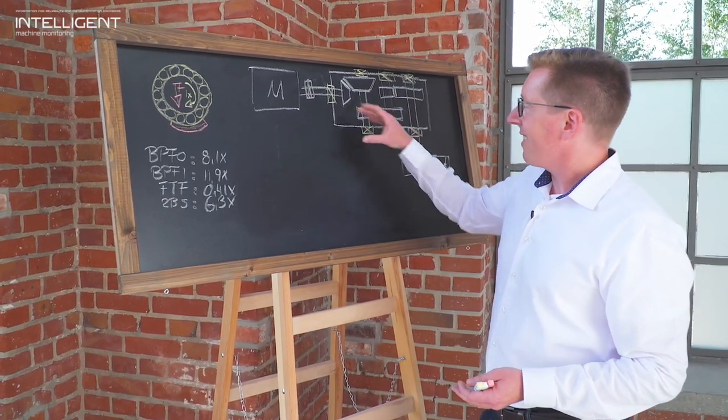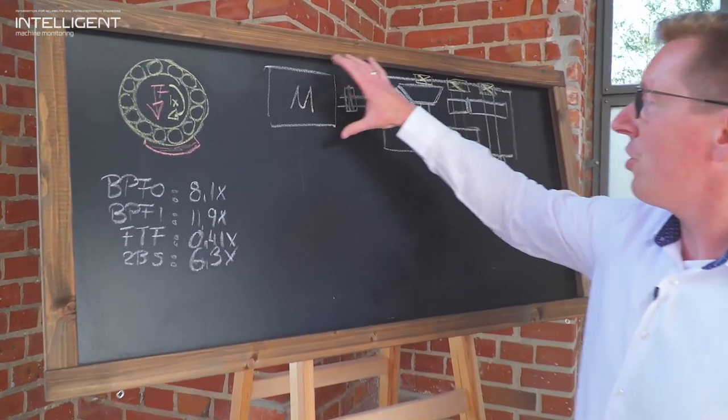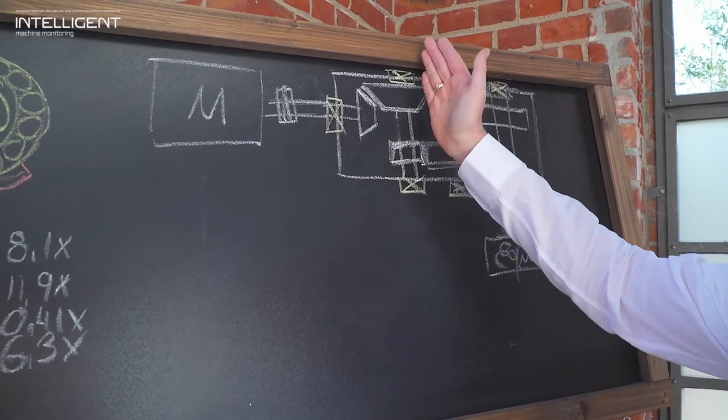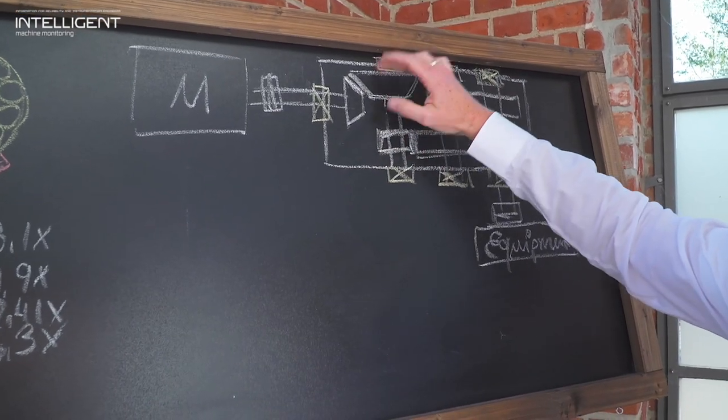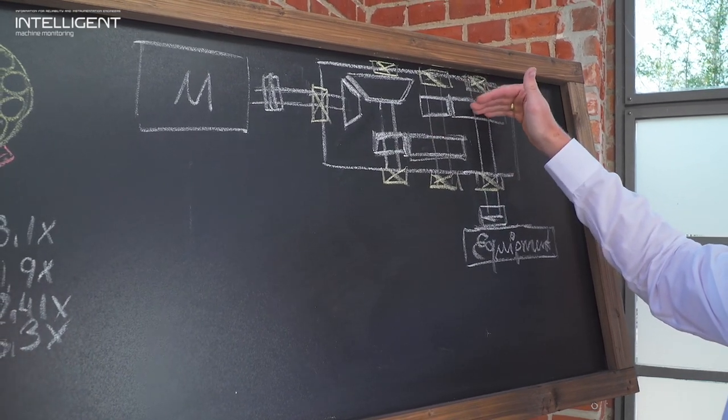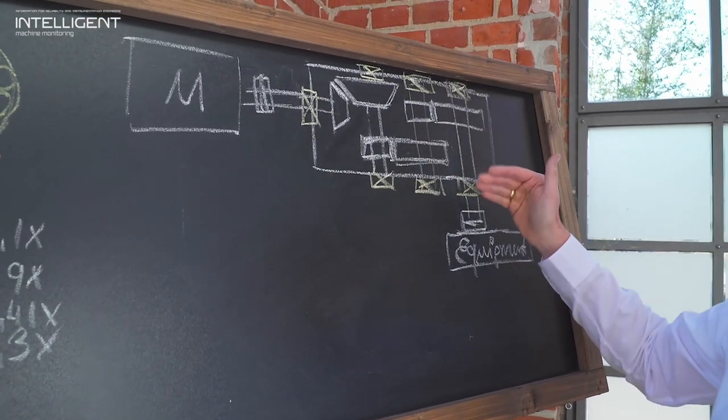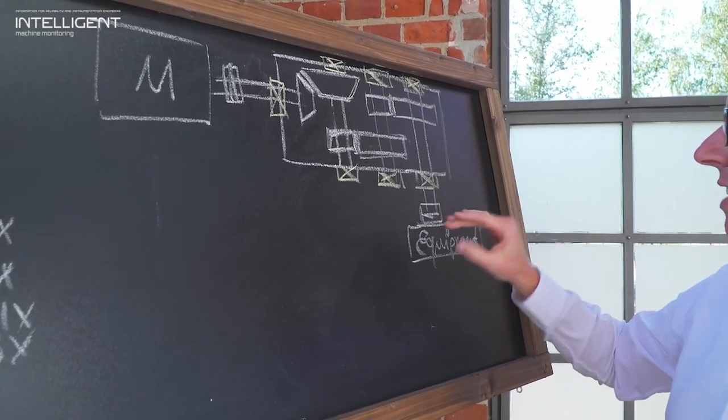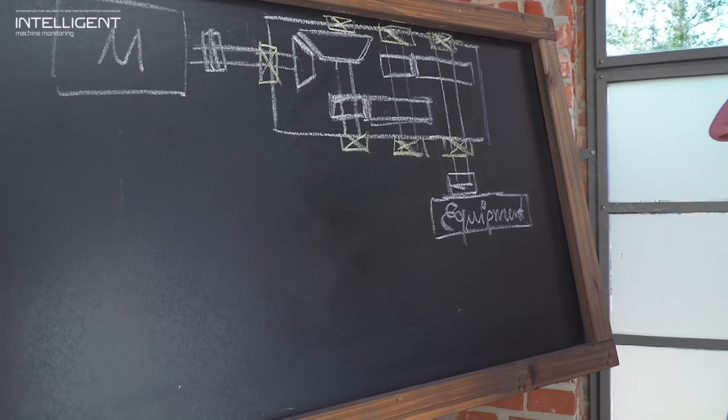A gearbox like this starts with an electrical motor, a coupling driving a bevel gear on the input side, rectangular drive. We have the first speed reduction, second speed reduction between these two gears, and a third gear set for the third gear reduction and the low speed output shaft driving some type of equipment.